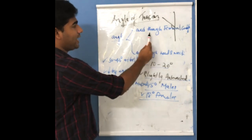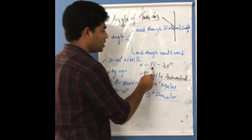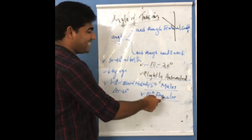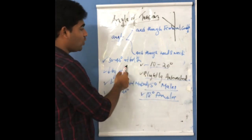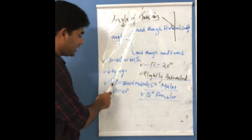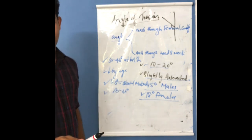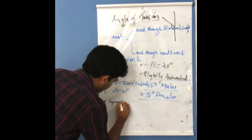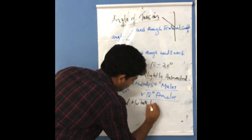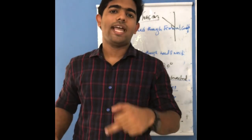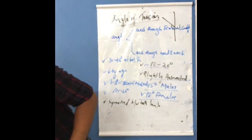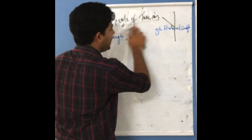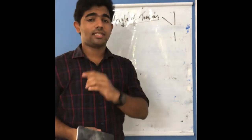Let us go through the key points: angle of torsion is an angle made between an axis through the femoral condyle and an axis through the head and neck of the femur. It is usually 10 to 20 degrees because our femur is slightly anteverted. It is 15 degrees in males and 18 degrees in females. It is 30 to 40 degrees at birth, decreasing at a rate of 1.5 degrees per year until skeletal maturity. One unique feature: it is symmetrical between both limbs - unlike angle of inclination, angle of torsion is the same between both legs.